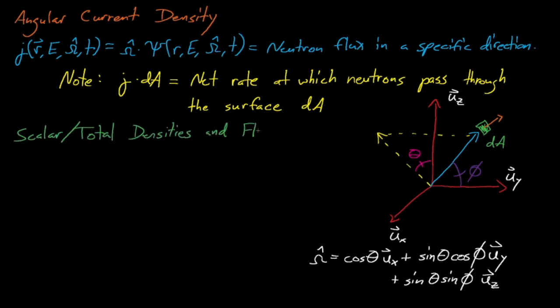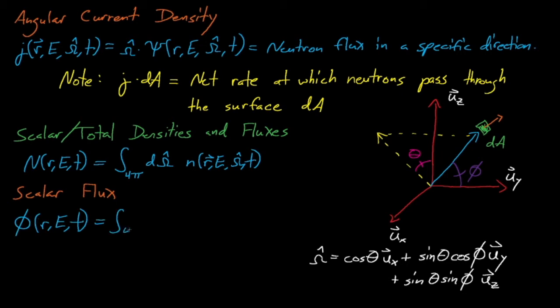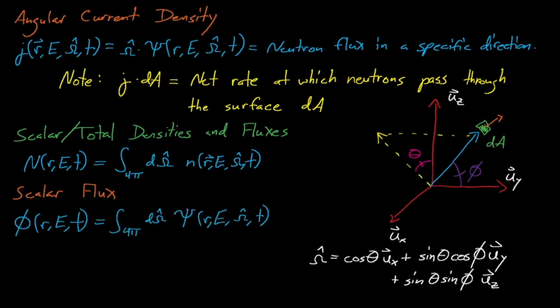Speaking of integrating over omega, we can integrate each of these three quantities over omega. Integrating little n over omega gives us the scalar, or total, neutron density. Integrating ψ over omega gives us the scalar neutron flux, φ. And integrating little j over omega gives us the neutron current density, j.